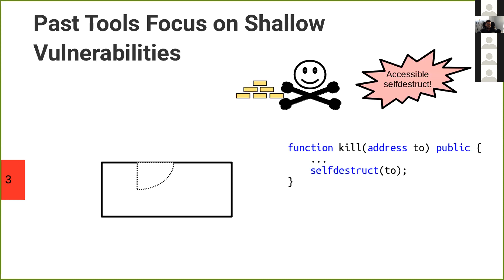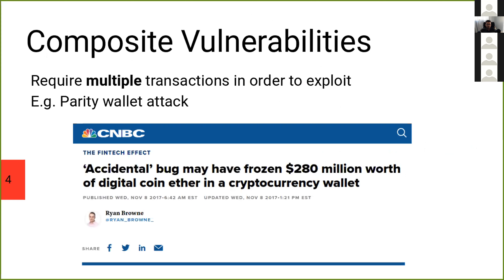This kind of vulnerability is called accessible self-destruct, and you do not want self-destruct to be accessible. Some people are arguing for deprecating this instruction. Luckily, these kinds of shallow bugs are not usually present in live smart contracts — at least ones which have funds in them — because they can be easily spotted by code reviewers.